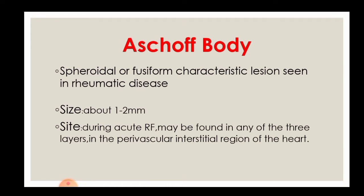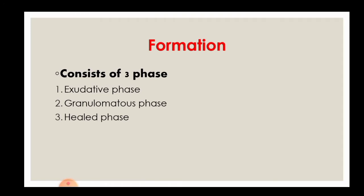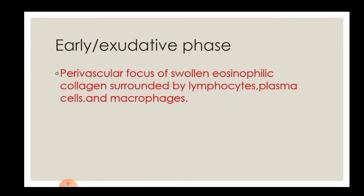Now for the formation of the Aschoff body - the formation consists of three phases: the exudative phase, the granulomatous phase, and the healed phase. In the early or exudative phase, the perivascular focus of swollen eosinophilic collagen is surrounded by lymphocytes, plasma cells, and macrophages.